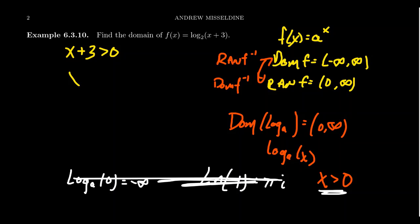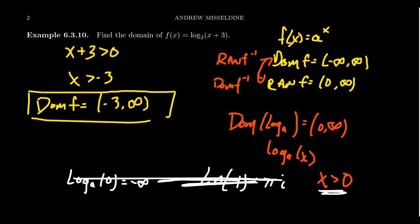Just subtract 3 from both sides, we get x is greater than negative 3. And so then the domain of our function f here would be negative 3 to infinity, where we do not include negative 3 here, because the log base 3 of 0 is undefined in this situation. So the domain would be negative 3 to infinity.